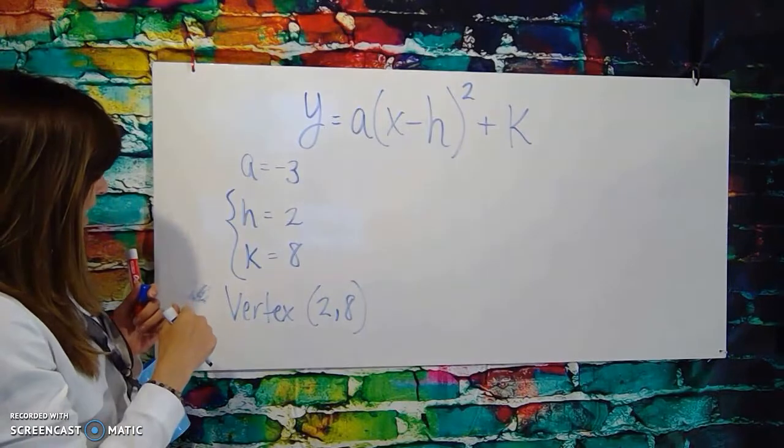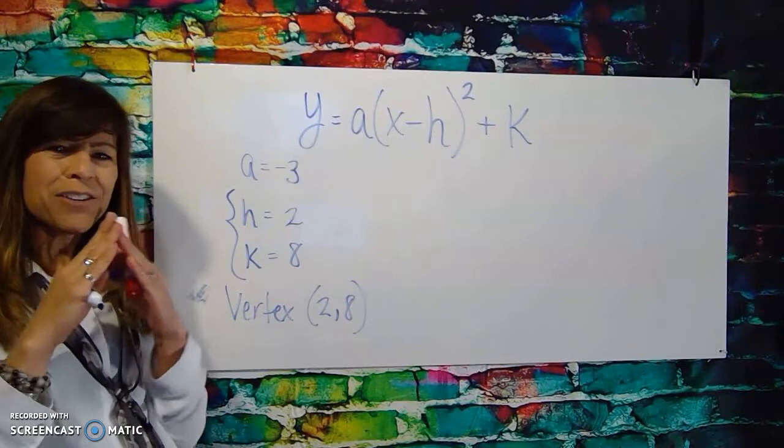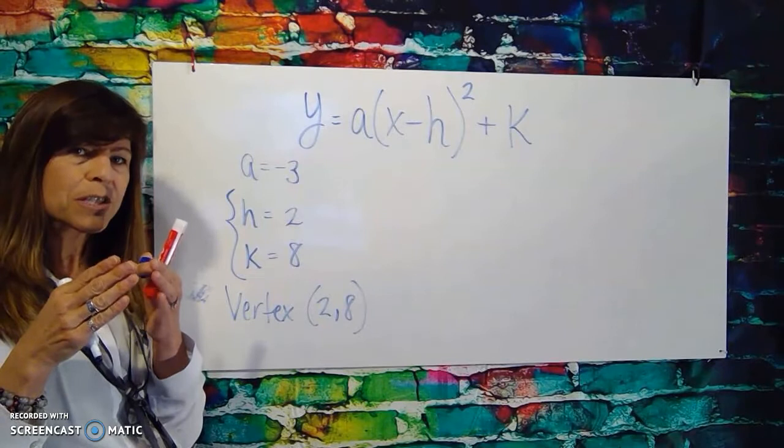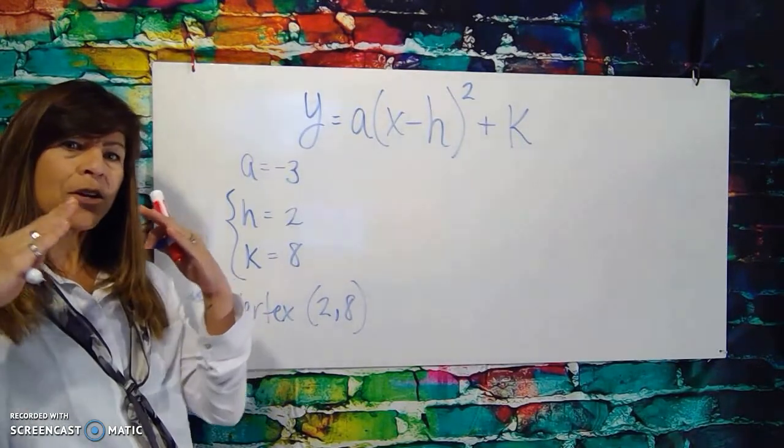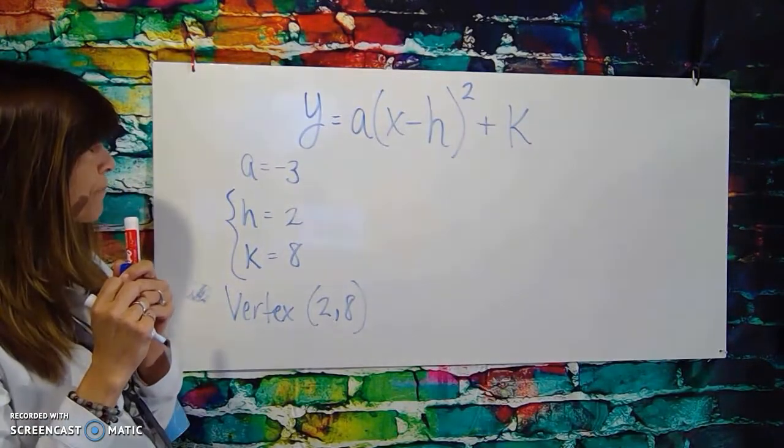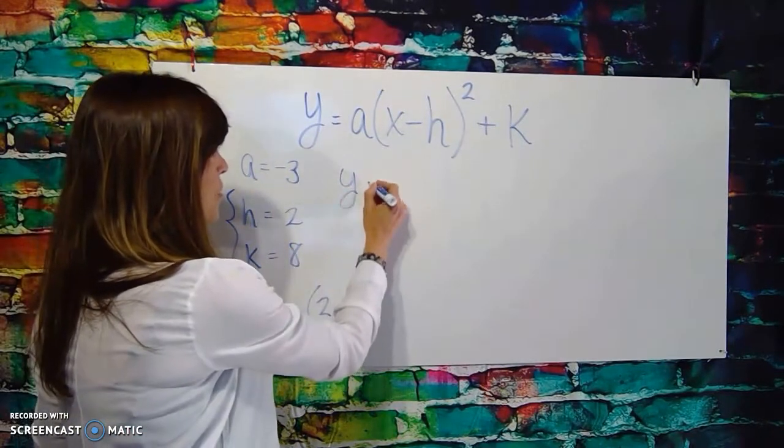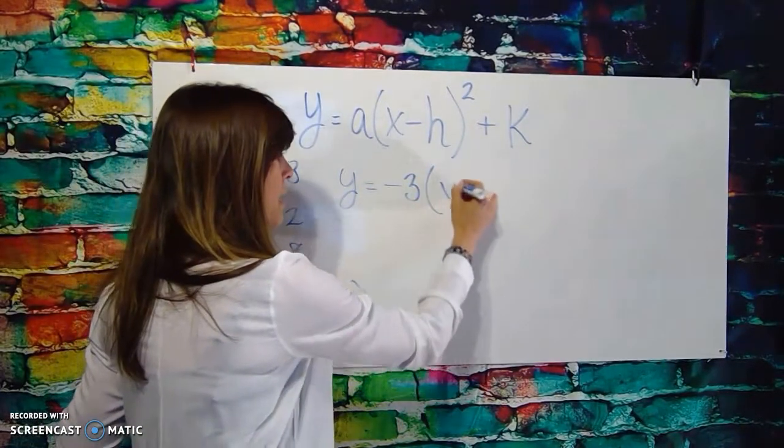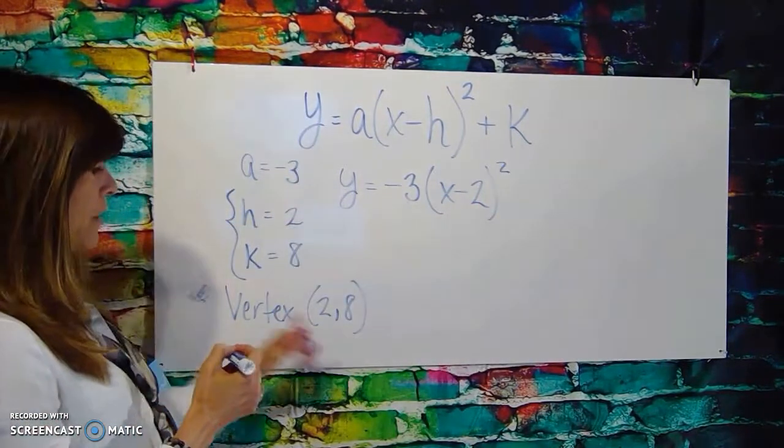Okay, the a value of negative 3, I usually kind of refer to that as the family width. We can talk about that a little bit more in some other examples. It really determines how wide or how narrow your parabola is going to end up being. All right, well let's start with the vertex and plugging everything in. So this is going to be the equation y equals negative 3, that jumps in there for our a value, x minus 2 squared, and then plus 8.